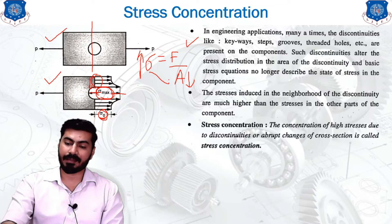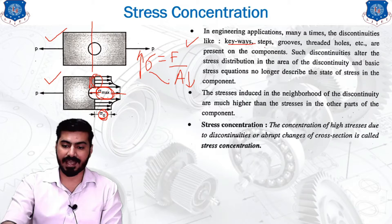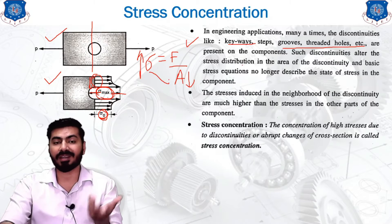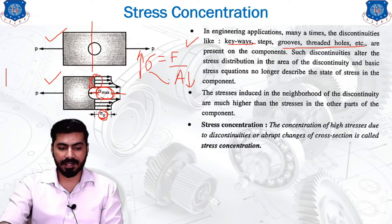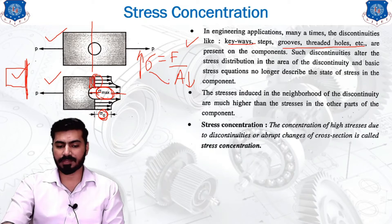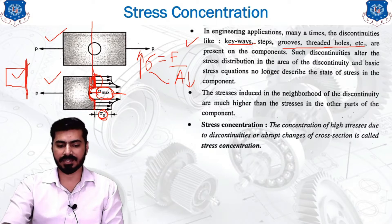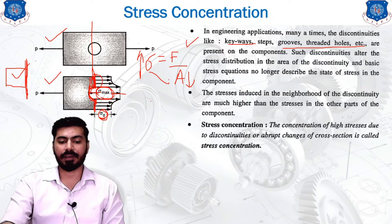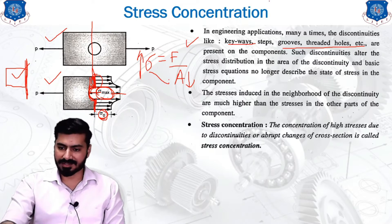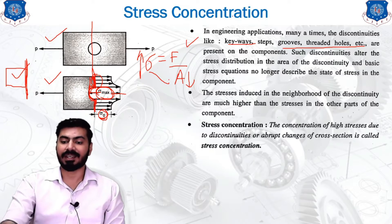In engineering applications, many discontinuities — such as keyways, steps, grooves, and threads — are present on components. If you cut a body at a uniform section with no discontinuity, there is no stress concentration. But if there is a discontinuity — for example, where the cross-sectional area is uniform up to a point and then suddenly has a hole — then there is a chance that stress concentration will occur in that component.